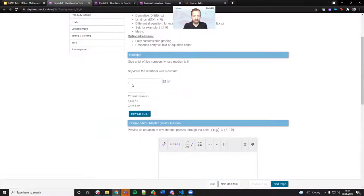If we look at some of the answers here, we see: give me a list of five numbers whose median is six. A very open question. As we've seen with the possible answers, we could just do four, five, six, seven, eight. Get rid of that first comma, press how did I do, we can see that's graded correctly.